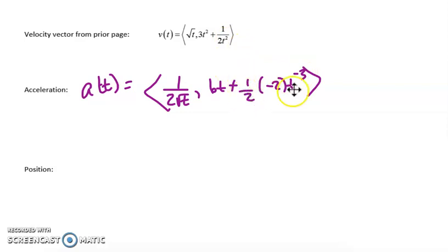Leave the coefficient of 1/2 out in front. So my acceleration vector is 1/(2√t), comma, 6t, and then 1/2 times -2 is -1/t³.